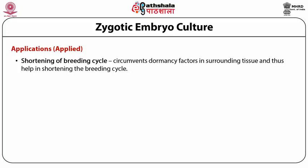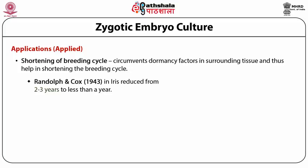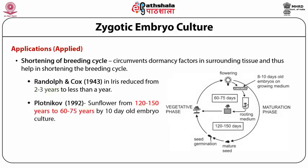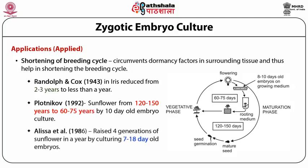This method of breaking dormancy by excising embryos and culturing on artificial medium has considerably helped in shortening breeding cycles. For example, Randolph and Cox reported that iris, which has a life cycle of two to three years, could be reduced to one year by embryo culture. Similarly, sunflower has a life cycle of 120 to 150 days, much of which is during embryo maturation and dormancy. By excising 10-day-old embryos and culturing them, this period could be reduced to almost half — 60 to 75 days.